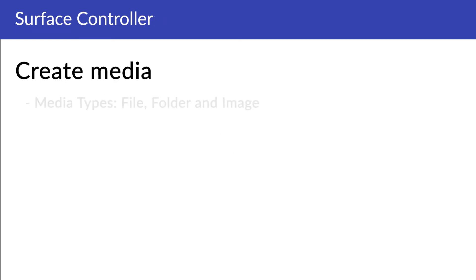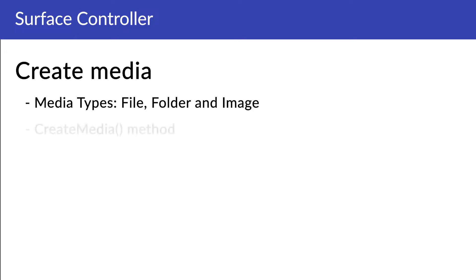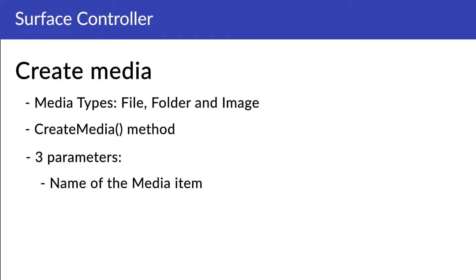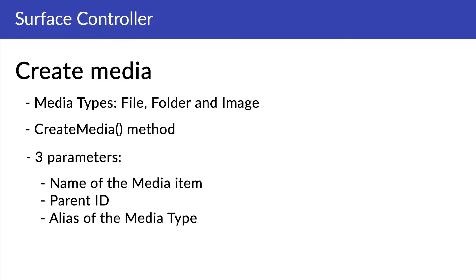In Umbraco, there are by default a set of different media types: file, folder, and image. To create either of these media types, we can use the createMedia method. Just like the create method in the content service, this method takes three parameters. The first parameter is the name of the media item — the name of the folder, image, or file being created. The second is the parent ID, indicating where in the media content tree the new media item should be placed. And finally, the third parameter is the alias of the type that should be used — file, folder, or image. In this video, we'll be creating a new image media type and a new folder to place the image into.